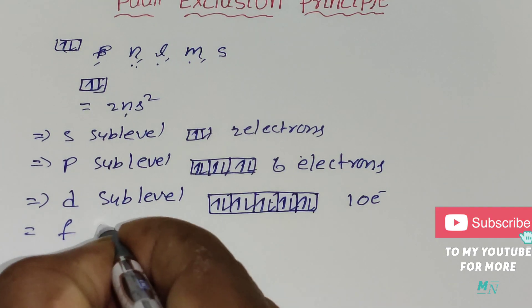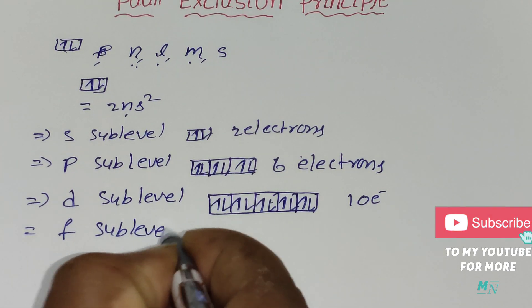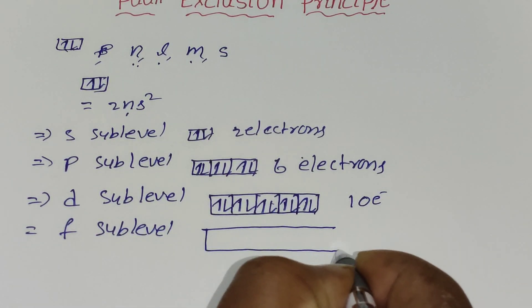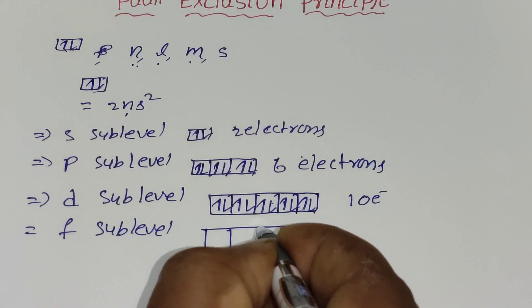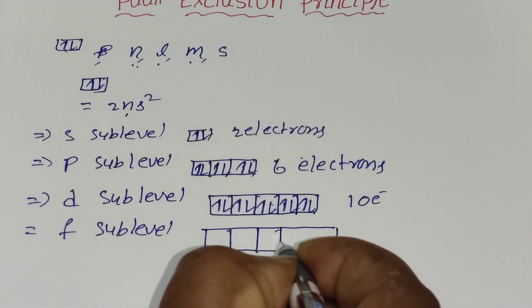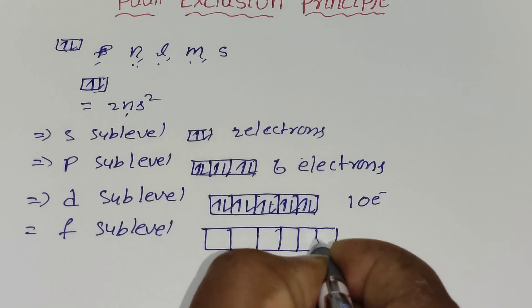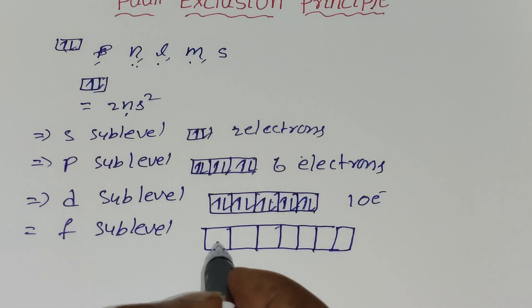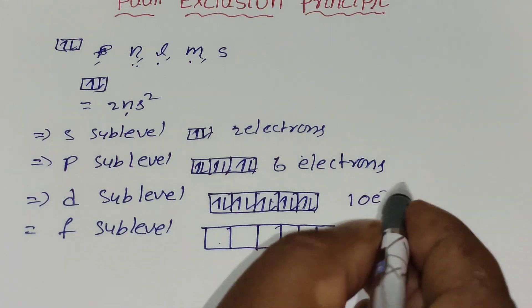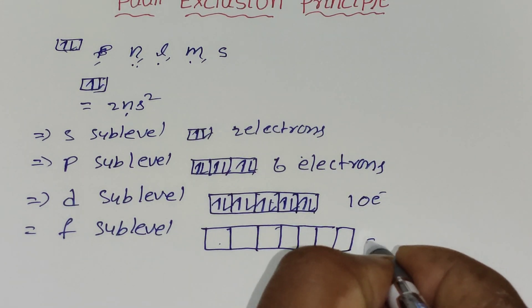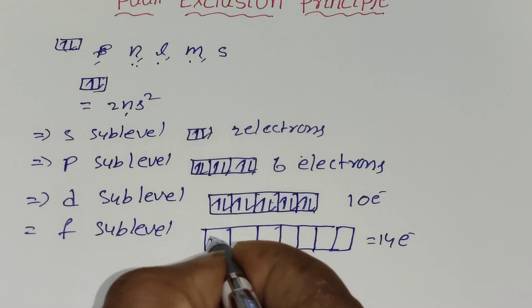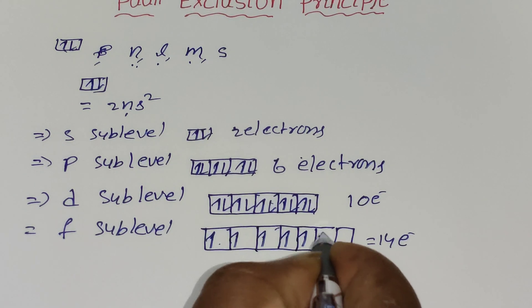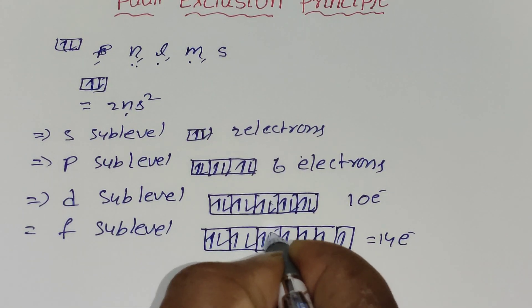In the f sublevel, there are seven orbitals. Each orbital has a capacity of two electrons, so seven orbitals times two gives fourteen electrons total. Out of the fourteen, seven electrons are in the clockwise direction and the remaining seven are in the anticlockwise direction.